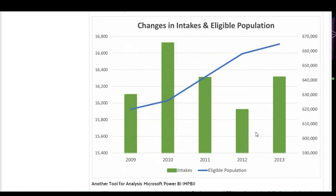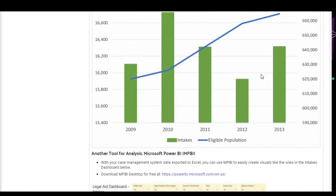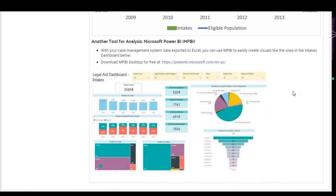At the bottom of the page is another example — an intakes dashboard. The example uses an open source program called Microsoft Power BI, which can easily use data from Excel among other sources to create nice visuals including multiple types of analyses. I presented a tutorial on this program at the January 2017 TIG conference and would be happy to send that to anyone interested. I really recommend this tool as a resource for conducting analyses — it's very easy to use and creates nice visuals.